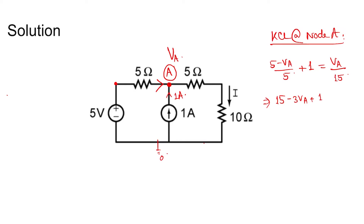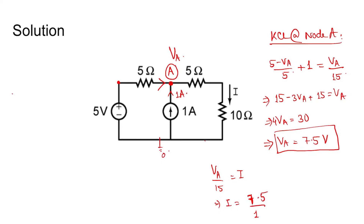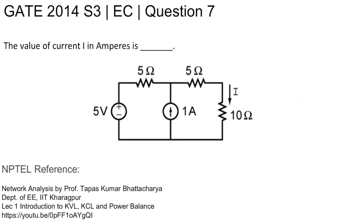Multiplying both sides by 15: 15 minus 3Va plus 15 equals Va, which implies Va equals 7.5 volts. Then I equals Va divided by 15, so I equals 7.5 divided by 15, which equals 0.5 amperes. The answer is I = 0.5 amperes.